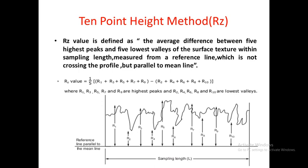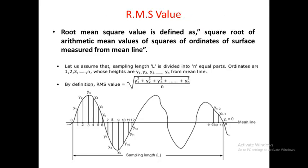Similarly, R2, R4, R6, R8, and R10 are the values of the five lowest values from the reference line, which is parallel to the main line. After determining the five highest peaks and the five lowest values, we find the average of the difference between both values, and the value we get is nothing but the Rz value or the roughness value.